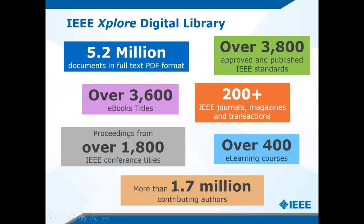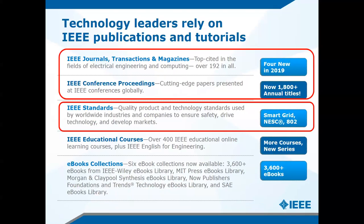IEEE Xplore covers all subjects, not only electrical and electronics, but also computer science and more. We have over 5.2 million documents, a lot of e-books, standards, journals, and conference titles. We have more than 1.7 million contributing authors — at least 1.7 million researchers who have submitted a research paper to IEEE. In the future, some of you will also be publishing with IEEE journals and conferences, joining these 1.7 million authors as leaders in engineering research.